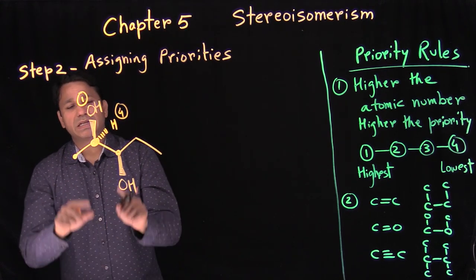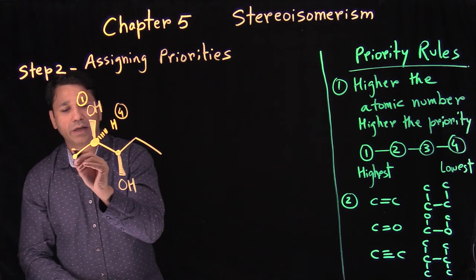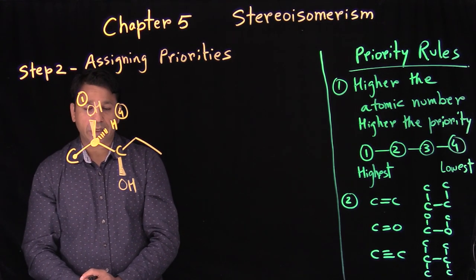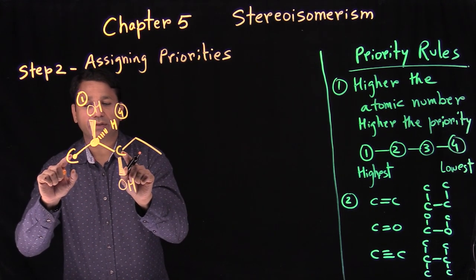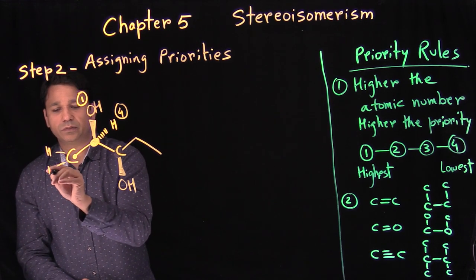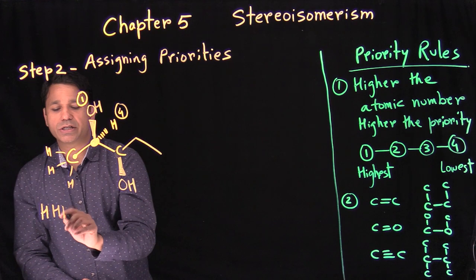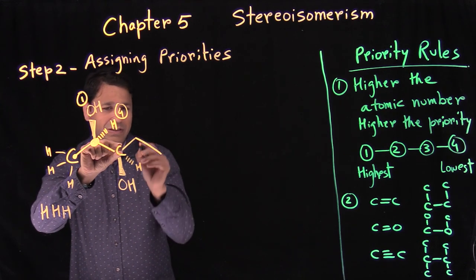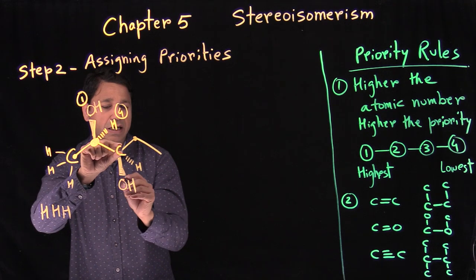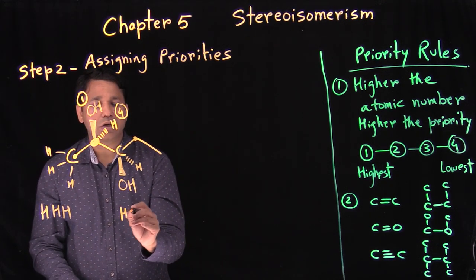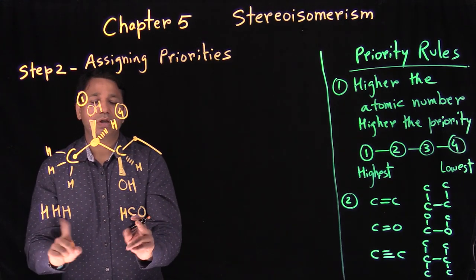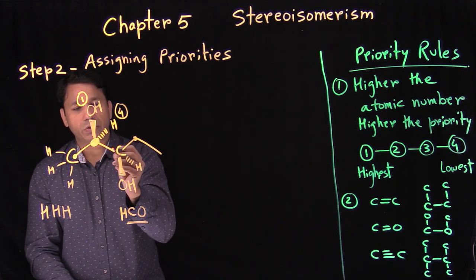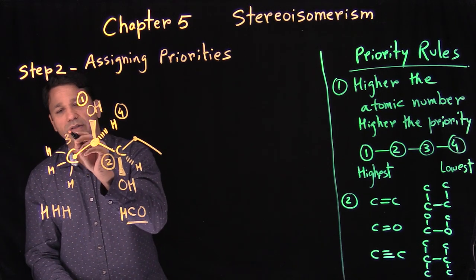We found one and four. Now we're trying to compare two and three. The first point of contact is the same — carbon and carbon. Then we go further. What's coming out of one carbon? Three hydrogens: H, H, H. Going further from the other carbon, we have a carbon, a hydrogen, and oxygen. So we have H, C, O. This gets higher priority because it has carbon and oxygen, which have higher atomic numbers than hydrogen.